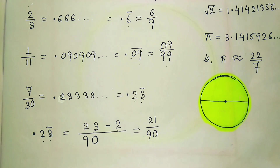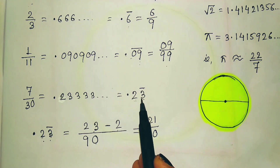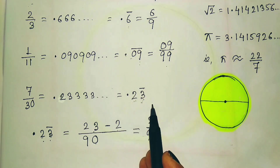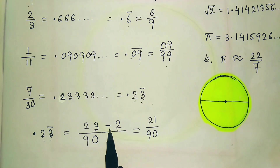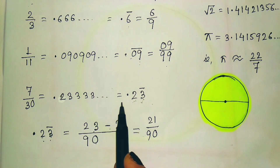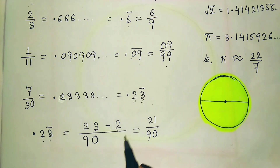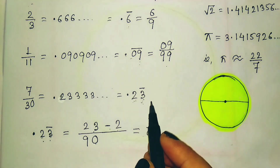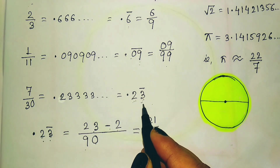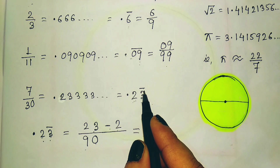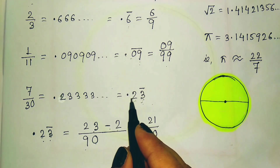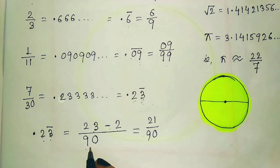In general, for repetitive non-terminating numbers: write the full number, subtract the non-bar part, then divide by 9s (one for each bar digit) followed by 0s (one for each non-bar digit). Simplify to get the fractional form.